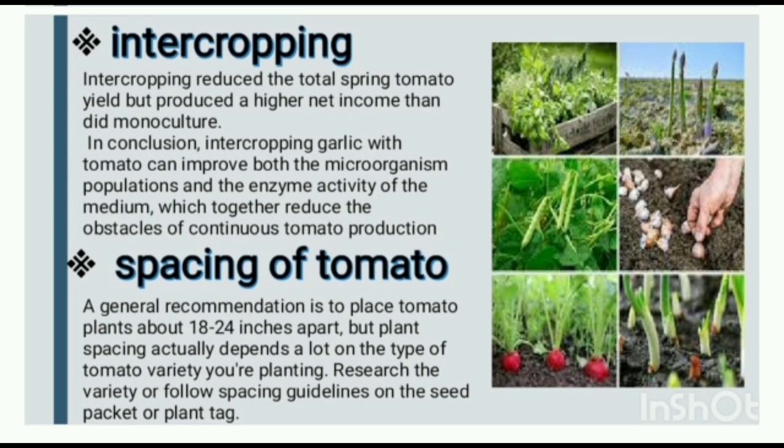Spacing of tomato: a general recommendation is to place tomato plants about 18 to 24 inches apart, but plant spacing actually depends a lot on the type of tomato variety you are planting. Research the variety or follow spacing guidelines on the seed packet or plant tag.